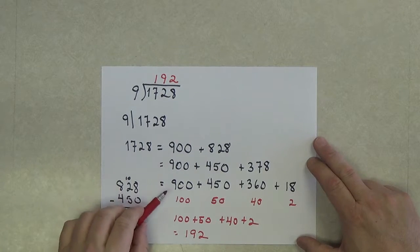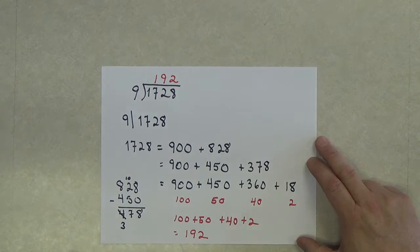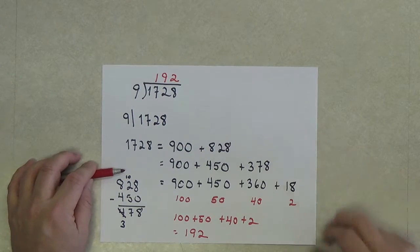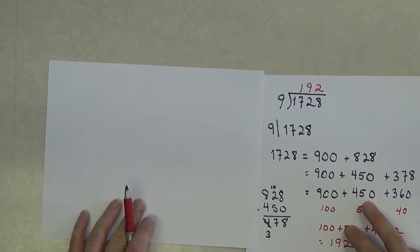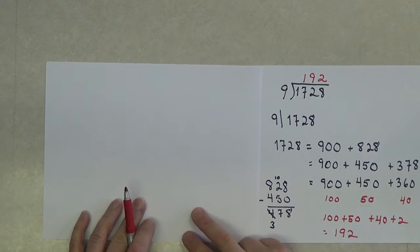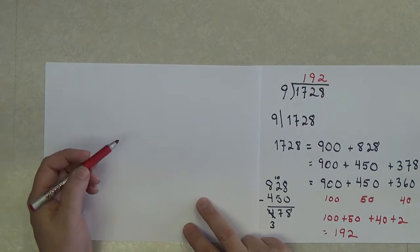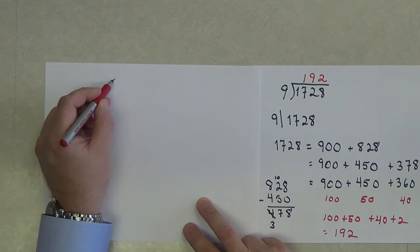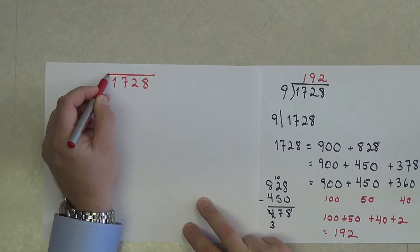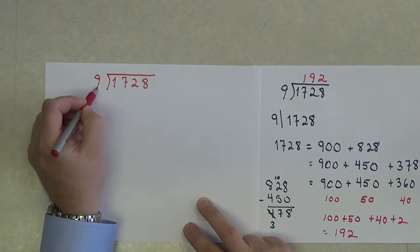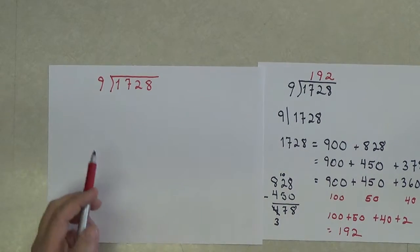And this is actually the process that division goes through when we do long division. Let me show you this using the scaffolding method that you should have learned in your first course in elementary mathematics. If we begin with the number 1728, and we do division with 9, we may ask ourselves, does 9 go into 1?